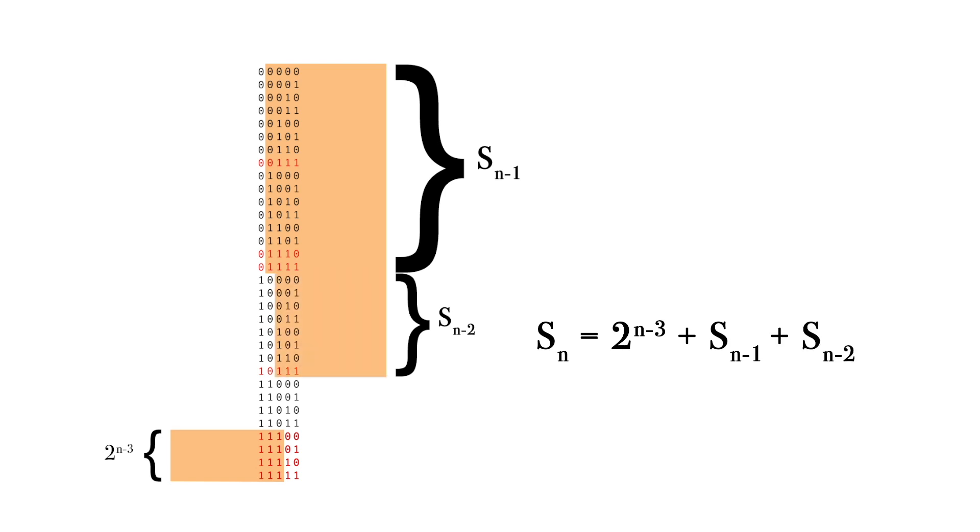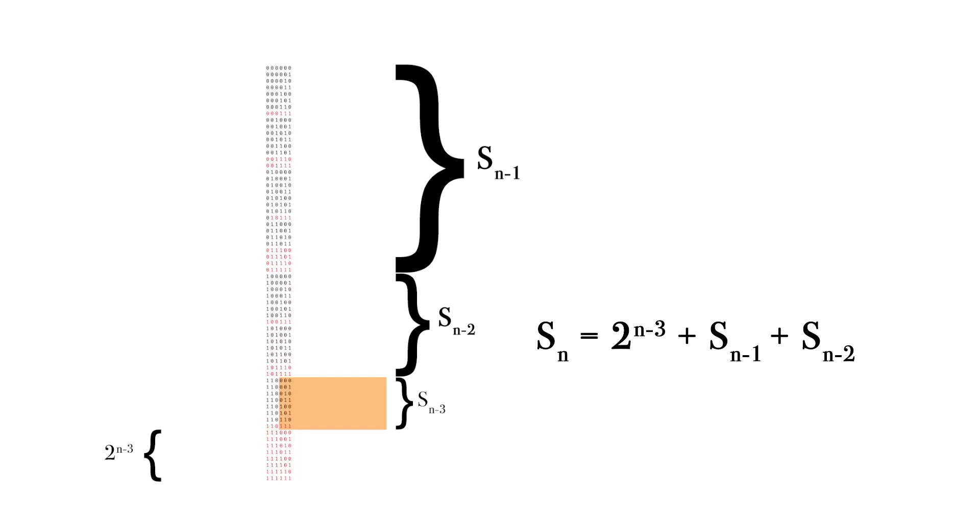It's time to suspect that the bad sequences that were found 3 steps before should be taken into account as well. For the case of 5 digits, there are no such sequences because 3 steps before we had only 2 digit sequences. So, let's check the case with 6 digits.